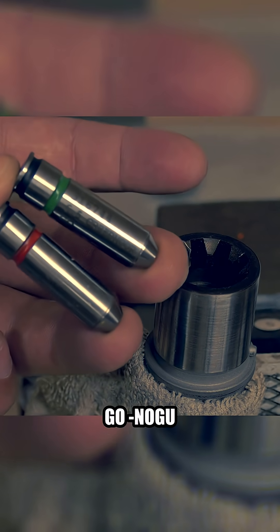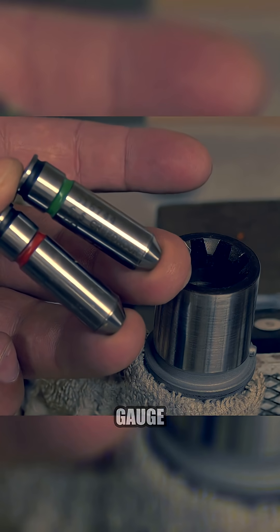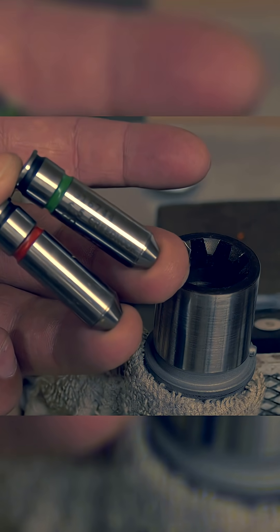And these are my 6.5 Creedmoor GO no-go gauges. The go gauge is the one with the green stripe, and the no-go gauge is the one with the red stripe. Pretty obvious.